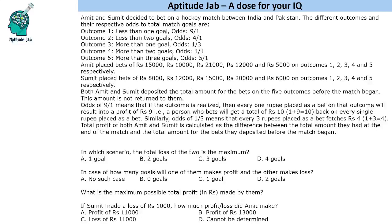Hello everyone, welcome to Aptitude Jab. This set says that there are two people who bet on a match and there are different outcomes possible and the respective odds of total match goals. If you do not understand odds, that is perfectly fine because it has been explained in this paragraph.